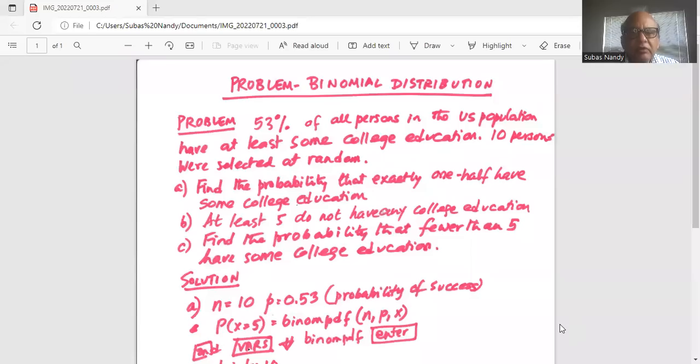Problem: 53% of all persons in the US population have at least some college education. 10 persons were selected at random. Part A: find the probability that exactly one half have some college education.